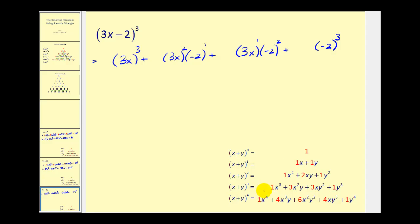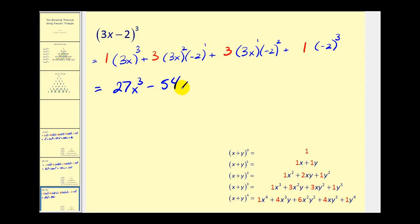We'll go to row three in Pascal's Triangle: one, three, three, one. Now we simplify each term. The first term is three x cubed, which is 27x to the third. For the next term, three times three squared is negative 54, so we write minus 54x squared. The next term: three times nine times negative two squared — that's four — gives positive 36x. And lastly, one times negative two to the third power is negative eight, so we write minus eight.